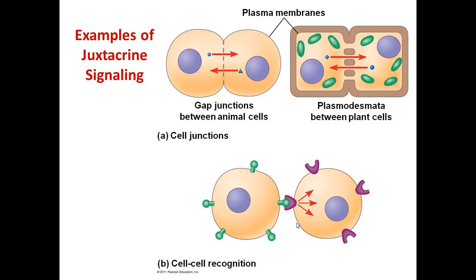Juxtacrine signaling is where cells signal to the cell directly adjacent to them. One type of juxtacrine signaling is signaling between gap junctions — junctions that allow the cytoplasm to be in direct contact between two adjacent cells, so signals can diffuse through these junctions. A very similar situation occurs in plants with junctions called plasmodesmata, where the cytoplasm and small molecules can pass directly from cell to cell through gaps in the cell wall, allowing adjacent cells to signal to one another.